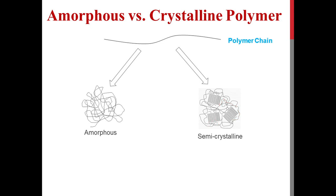An amorphous polymer is one where all chains are randomly oriented, whereas a crystalline or semi-crystalline polymer is one whose chains form both amorphous and crystalline phases. The question is: why will a polymer chain form an amorphous or crystalline phase?